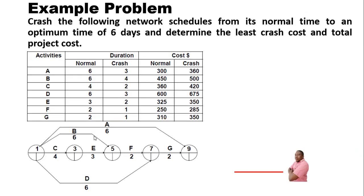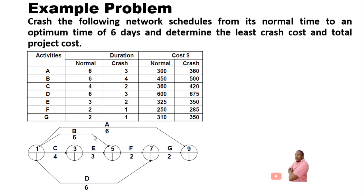Now let's focus on the problem we are going to use to demonstrate how we can perform project crashing in Python. The problem states: crash the following network schedule from its normal time to an optimum time of six days, and determine the least crash cost and the total project cost. The information given is a table with normal duration, crash duration, normal costs, and crash costs, along with a network diagram representing the problem.